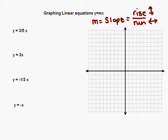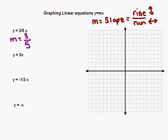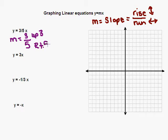Let's look at the first equation: y equals three-fifths x. First, let's identify the slope. The slope in this equation — in every equation — is the number in front of the x. So in this case it is three-fifths. That's our slope, three over five. This means we have a rise of three and a run of five. Since it's a positive three, we're going to go up three. Since it's a positive five, we're going to go to the right five for our run.